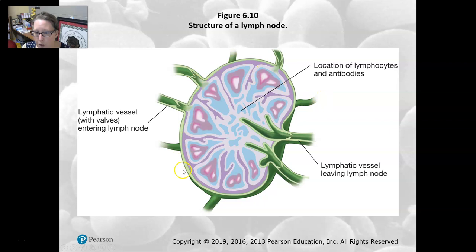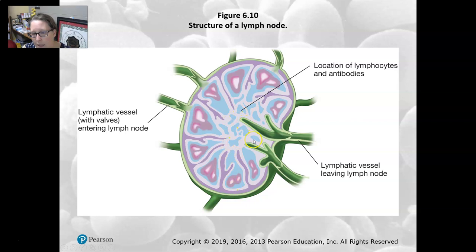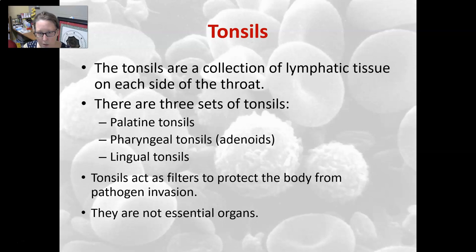This is a representation of a lymph node. You can see the afferent lymphatic vessels with valves entering the lymph node. The lymph fluid flows in and passes through compartments where the lymphocytes, antibodies, and macrophages are located. It gets cleaned up and then flows back out through the efferent lymphatic vessels, continuing toward the heart.